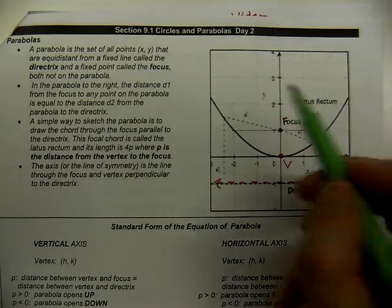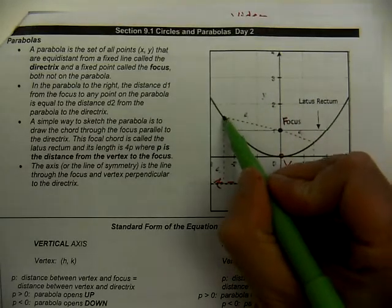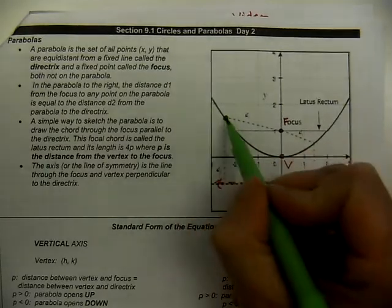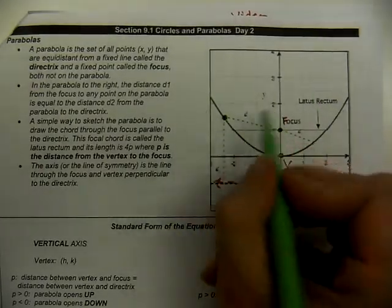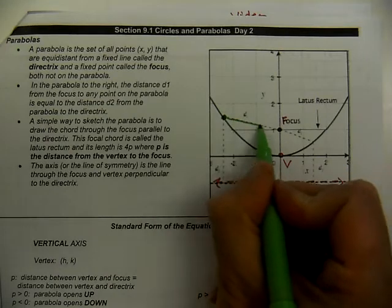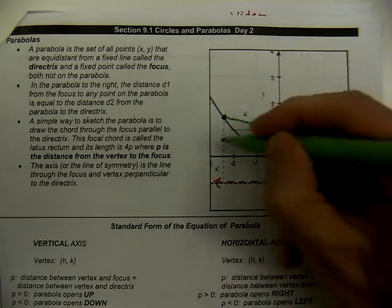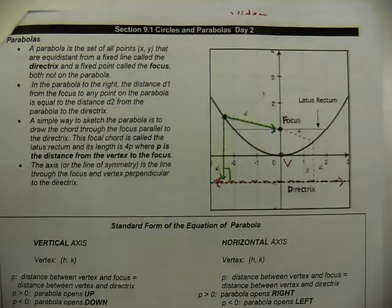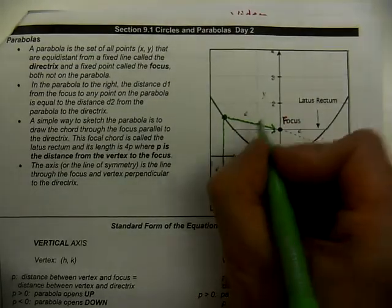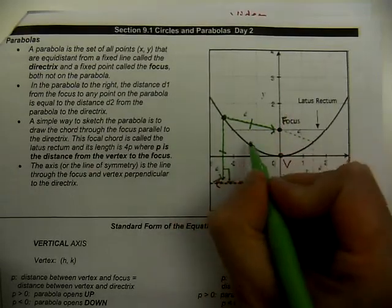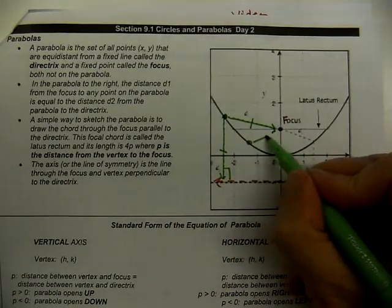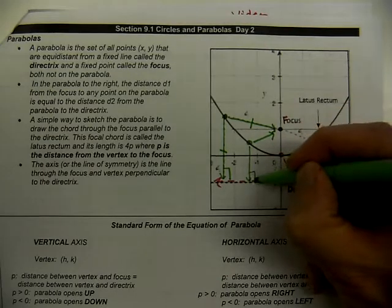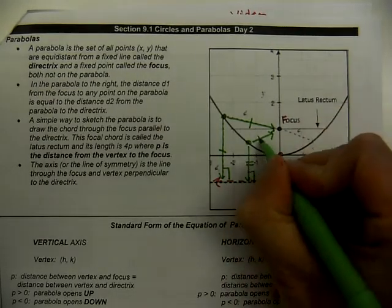What we're looking at here is a random point on the parabola. The definition of a parabola is that every single point is going to be the same distance from the focus as it is to the directrix. If you were to measure them, they should be the same. Here's another random point — measure the distance to the focus and the distance to the directrix, and again they should be congruent.